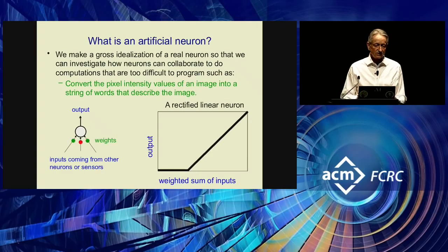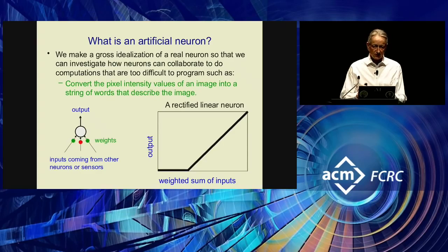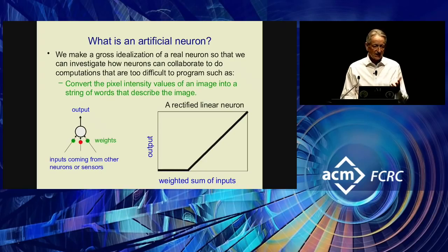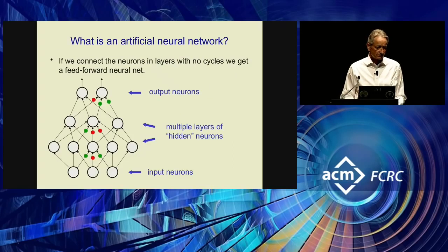I want to explain briefly how neural networks work. We make a gross idealization of a neuron — the aim is to get something that can learn, so we can study how to put big networks together to learn complicated things. It has incoming weights that the learning algorithm will vary, and gives an output equal to its input provided the input is over a certain amount — that's a rectified linear neuron. You hook them into a network with weights on the incoming connections. As you change those weights, you change what feature that neuron will respond to. By learning the weights, you're learning the features.